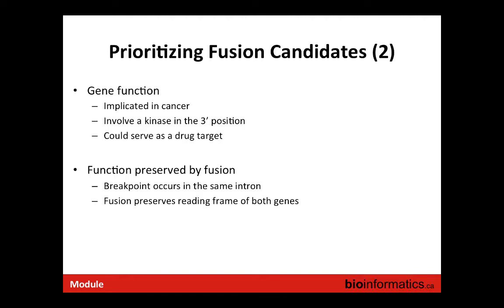Another way to prioritize gene fusions is to assess whether the fusion transcript would actually be translated into a fusion protein with relevant function. This is done by checking whether the codons of the 3' gene would be successfully translated. The breakpoint usually occurs in an intron, and at the junction between the exons of the two genes, if there is a frame shift, all downstream codons will be nonsense. The key question is whether the fusion boundary preserves the reading frame of both genes.